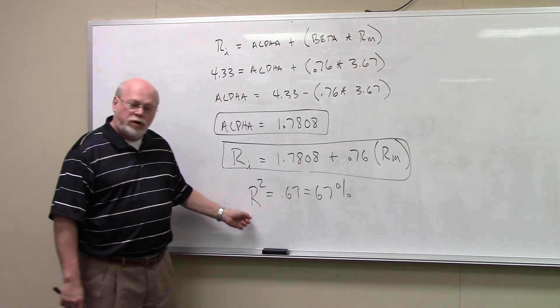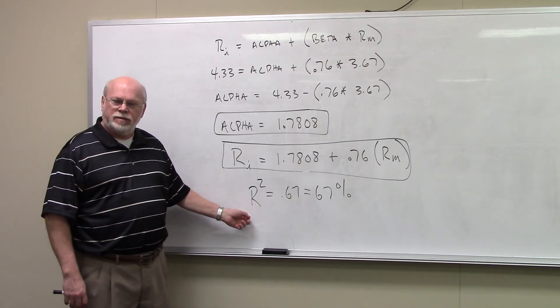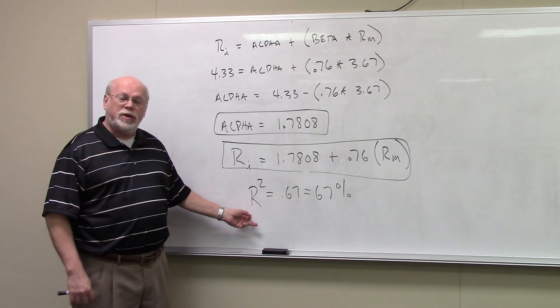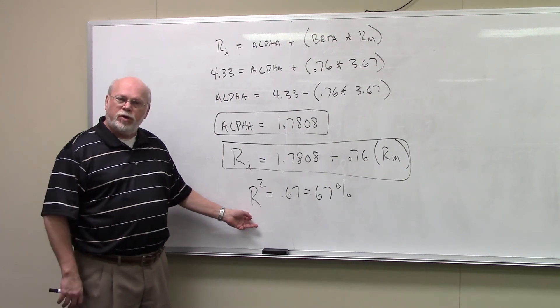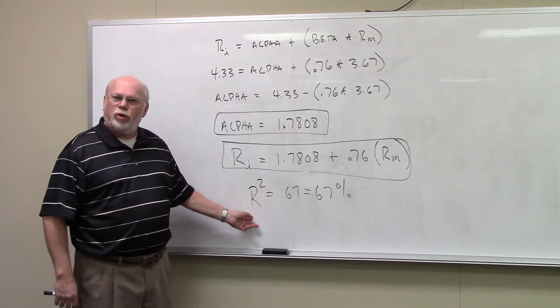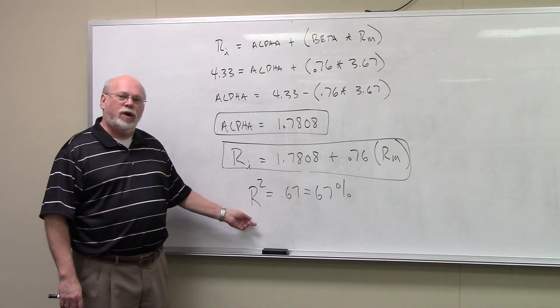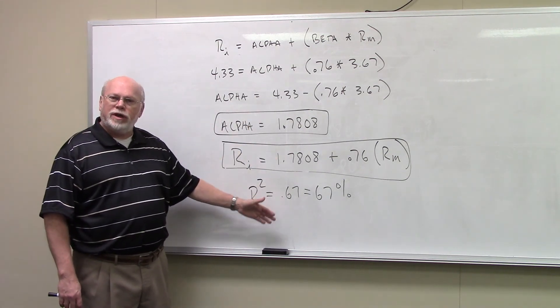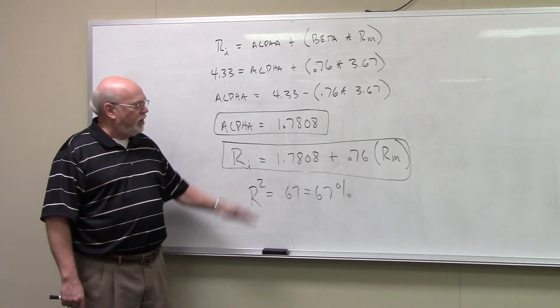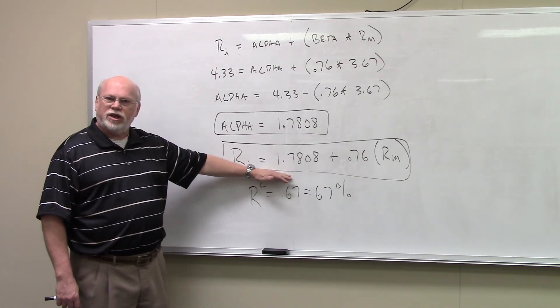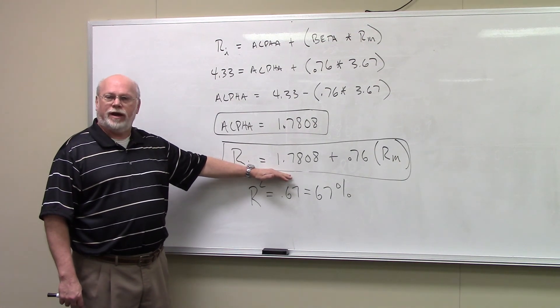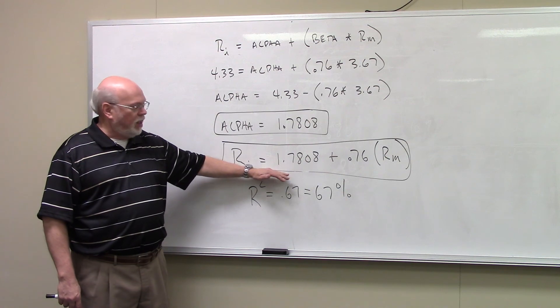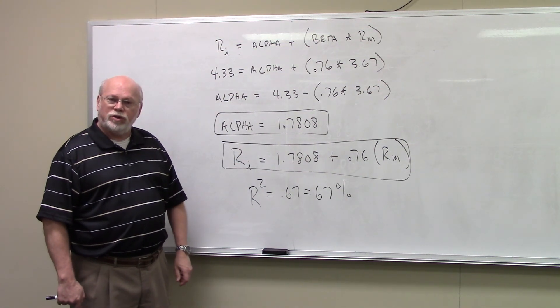That other 33%, we don't know what that is. We might add other factors, other elements, maybe do a multiple regression, but at this point, we don't know what that is. We'd have to go out and investigate. But this is a simple linear regression by hand that we've done. And this is how you come up with the regression equation, what's called the characteristic line for a security, for a company.